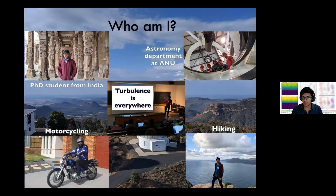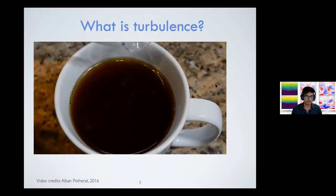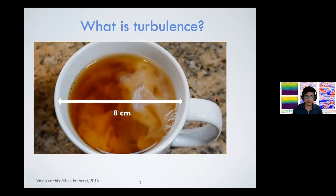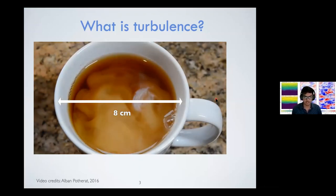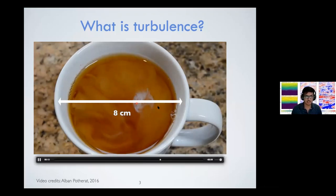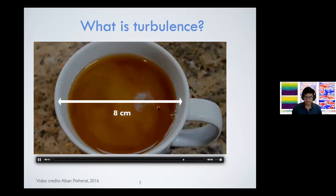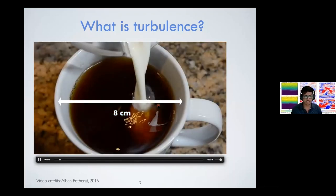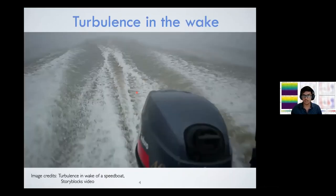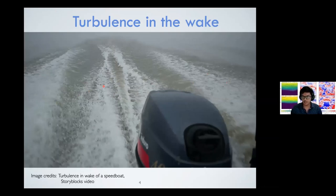Let's get started with something that many of us do every morning. We either have hot chocolate, tea, or coffee. While making coffee or tea or hot chocolate, we add milk, and when you do that you see all these swirls of milk — the white things actually make these circular patterns, which is a feature of turbulence. You also see similar disturbances in water when you're riding in a speedboat; in the wake behind your speedboat you see all these wave-like features, which is again due to turbulence.